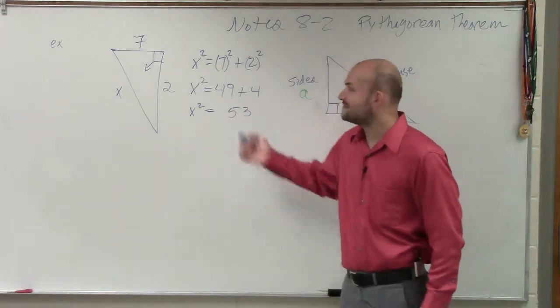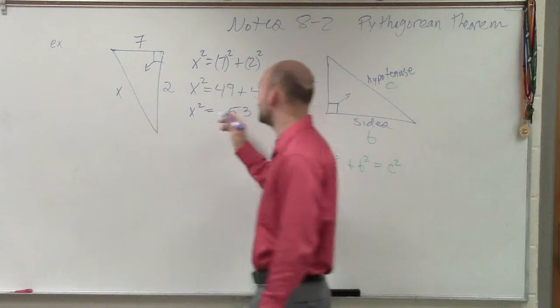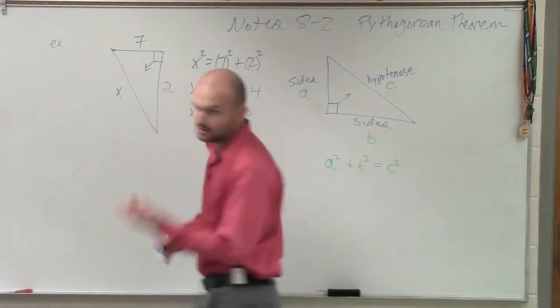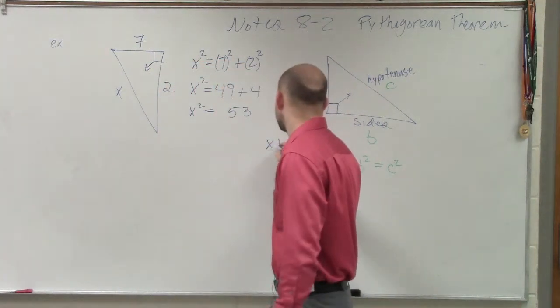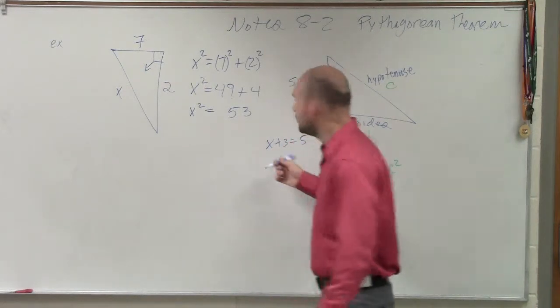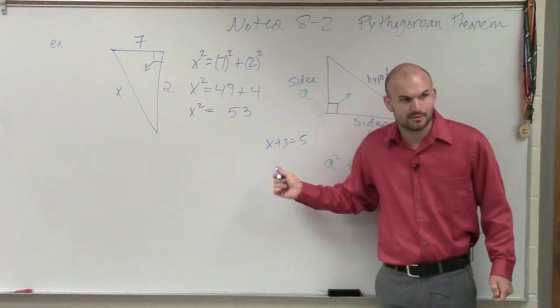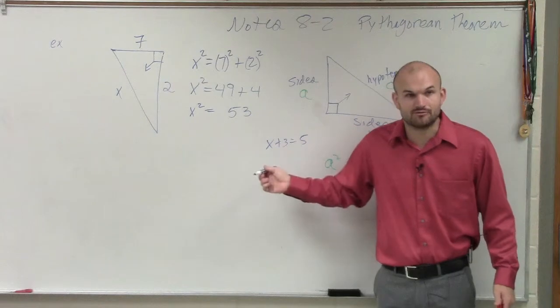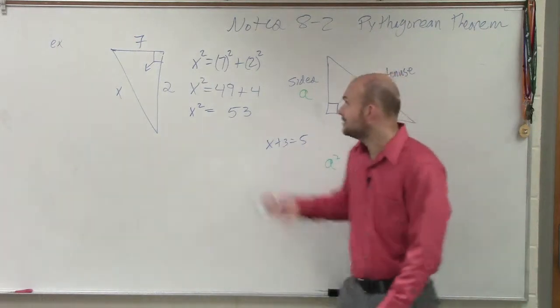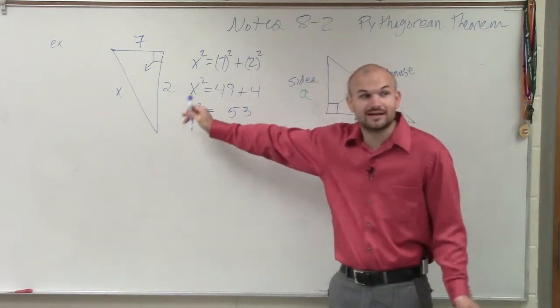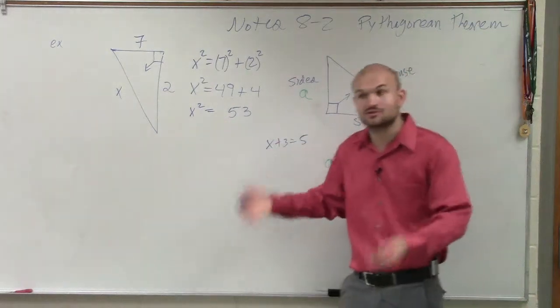So if I have x squared equals the square, x squared equals 53 to undo the square root, let me put it to you this way. If I have x plus 3 equals 5, what's happening to the x? Being added. So the inverse operation would be subtract, right? Now my x is being squared. The inverse operation of squaring is square root.